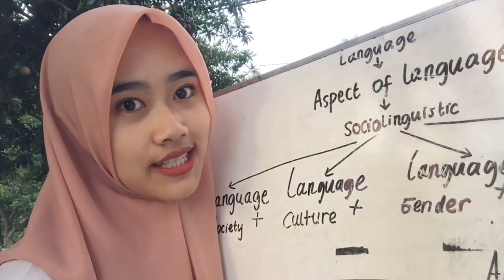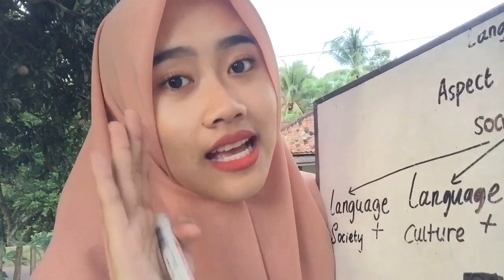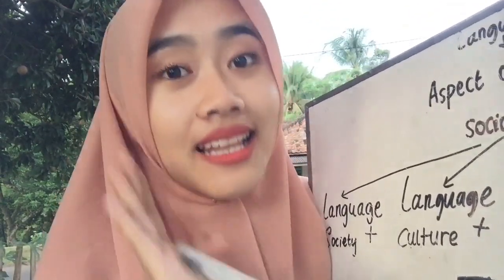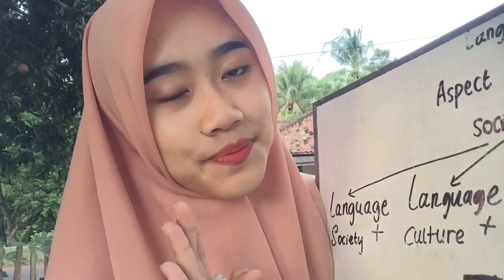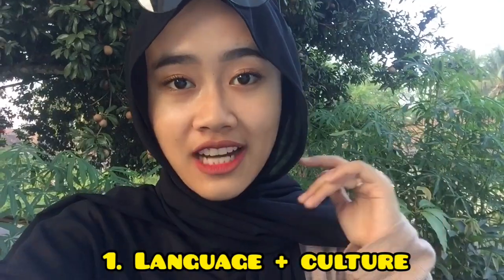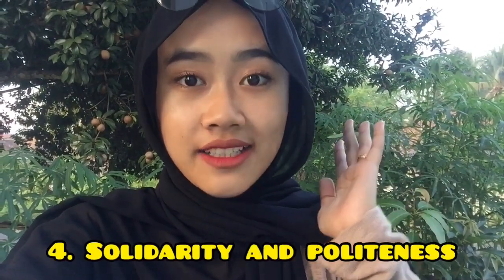After we know about language, we have to know the aspect of language. According to Redzuan, the aspect of language is called linguistics. And third is the sociolinguistics field. After that, we have four points: first, language and culture; language and society; language and gender; and the last is solidarity and politeness. And finally, we will find what addressing terms is.